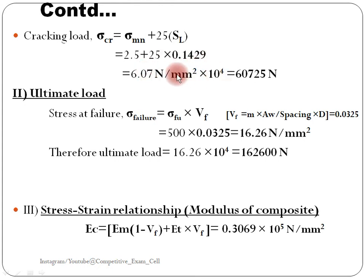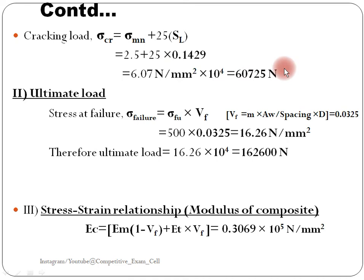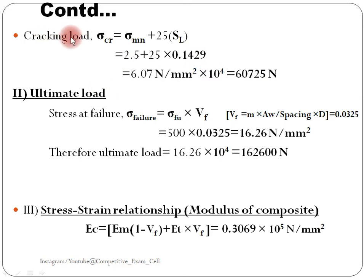Cracking load formula: sigma cr equals sigma mn plus 25 times sl. Putting all values: 2.5 plus 25 times 0.1429 gives 6.07 N/mm². Multiply by 10 raised to 4 to convert to Newtons for the cracking load.